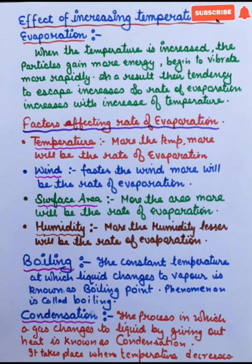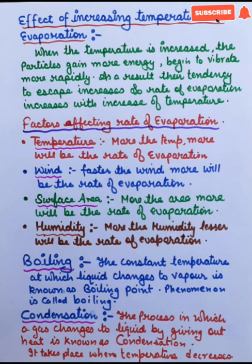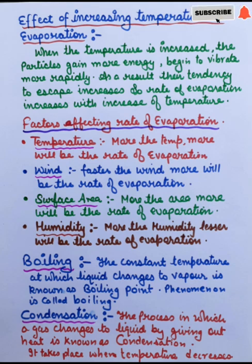The fourth factor is humidity. Humidity is inversely proportional to the rate of evaporation — more the humidity, lesser will be the rate of evaporation. During humid weather, moisture is already available in the atmosphere, so the atmosphere must first become saturated before water can evaporate from your clothes. Therefore, clothes do not dry as quickly in humid weather. We can conclude: more the humidity, lesser the rate of evaporation.